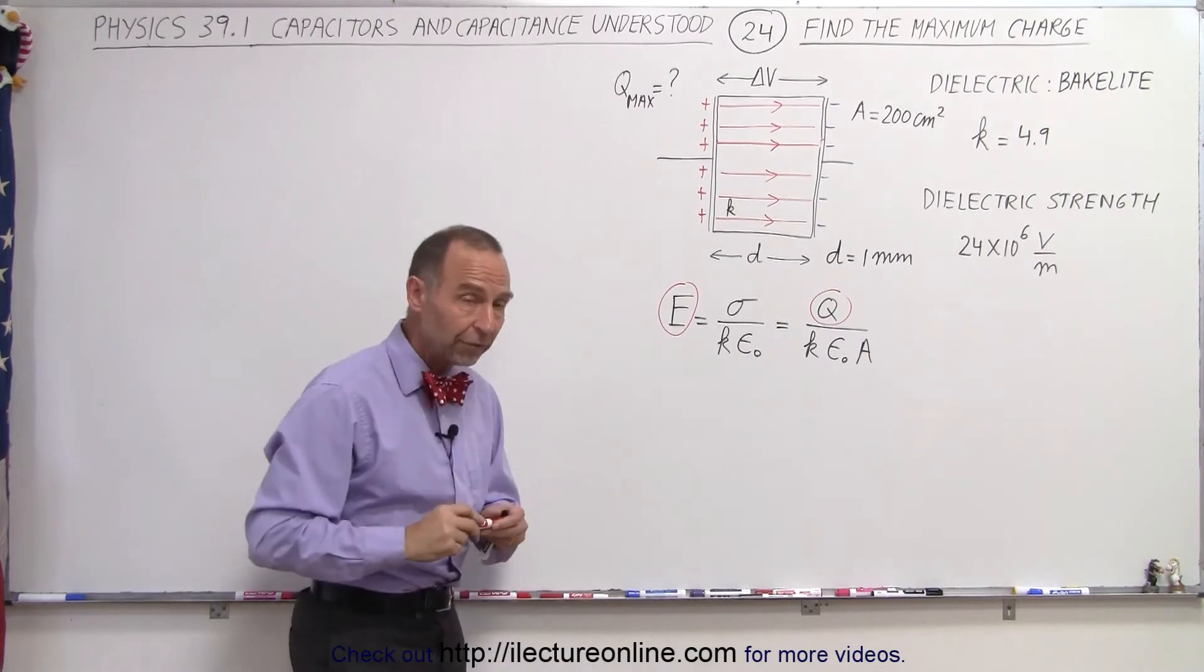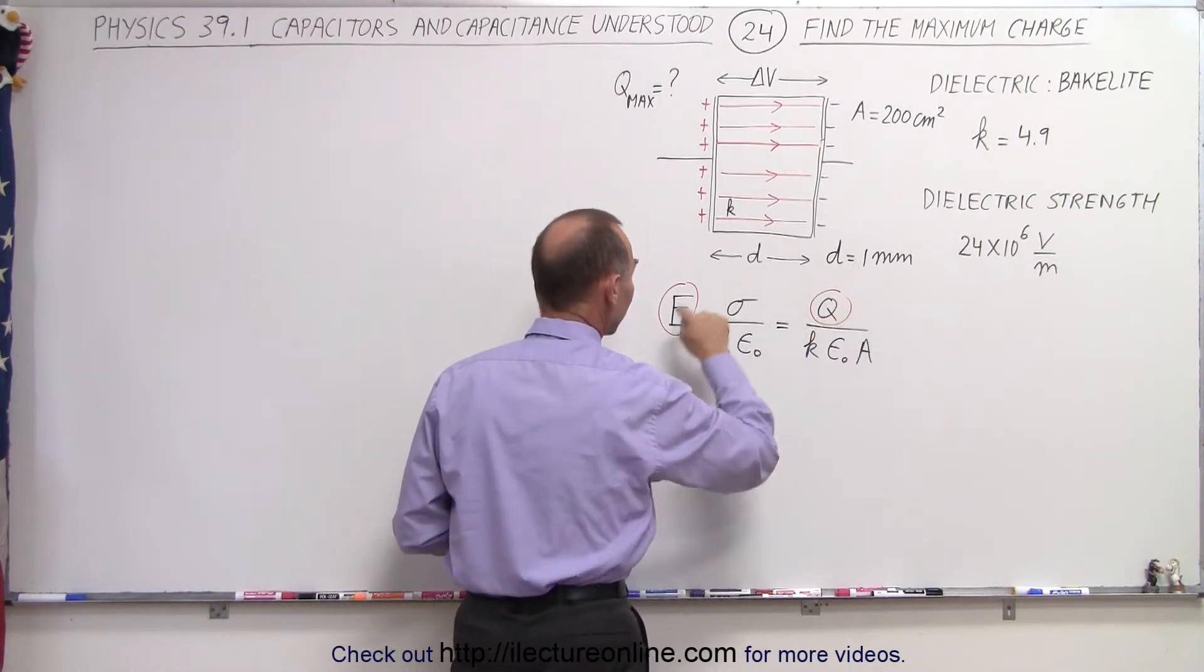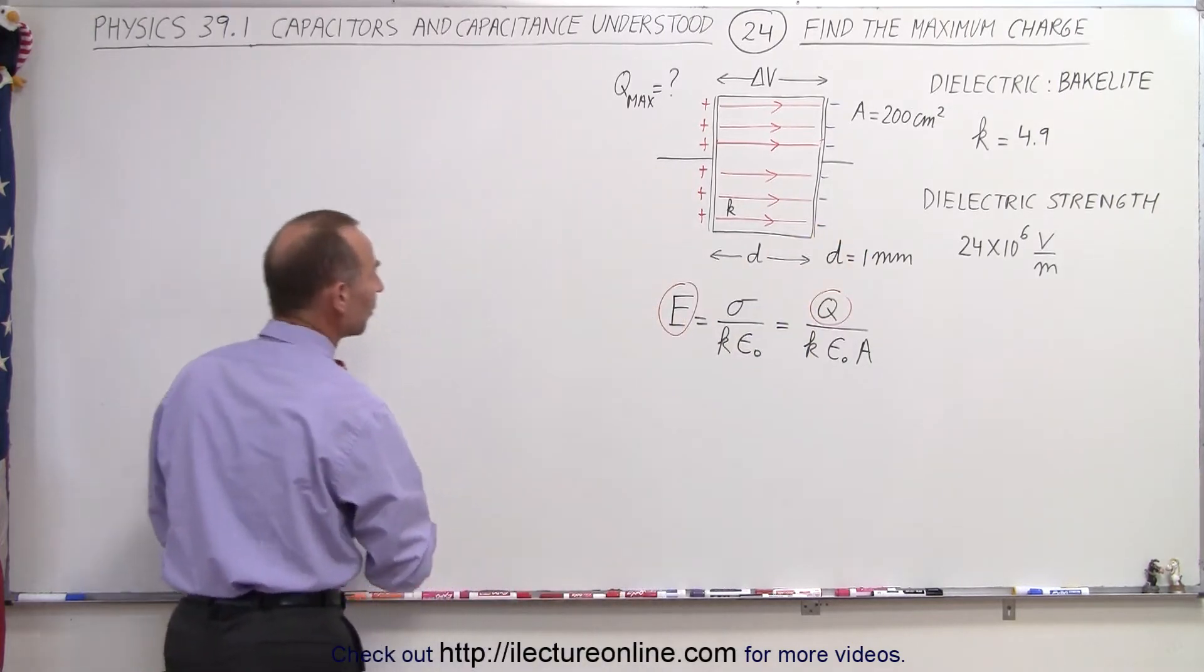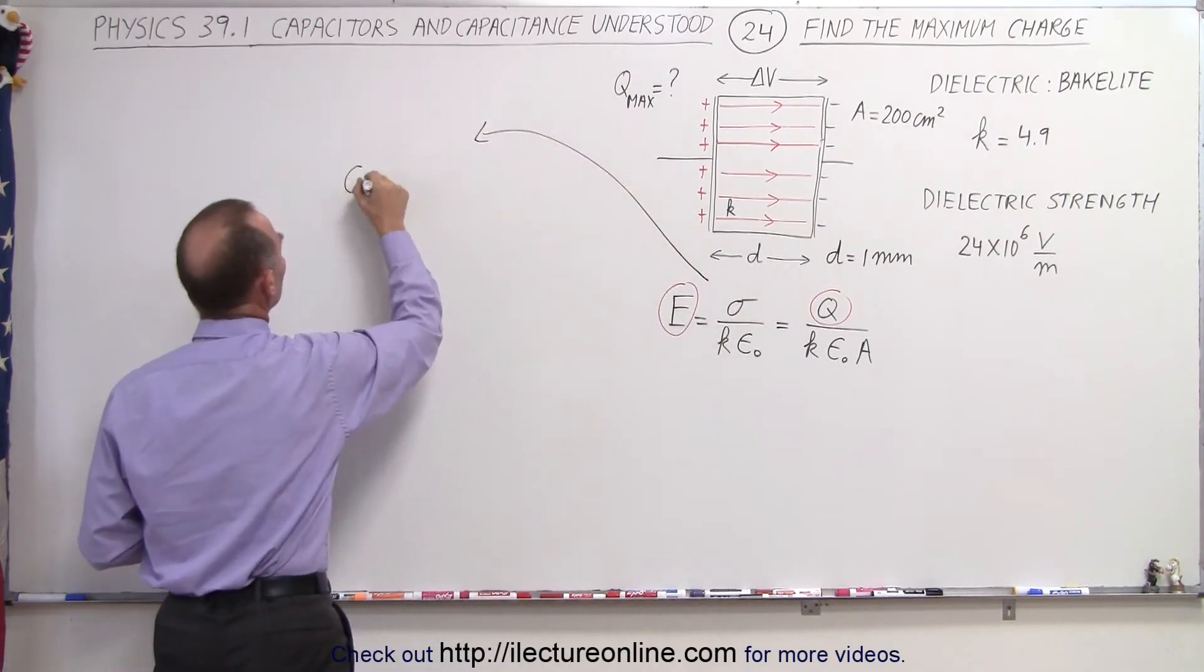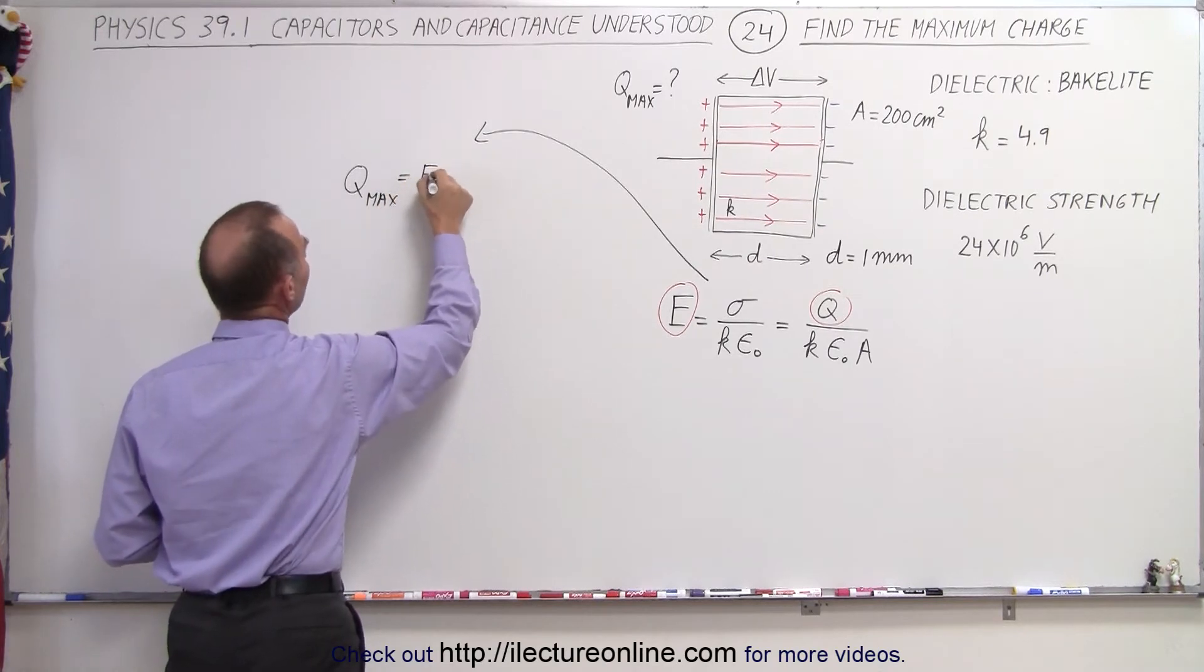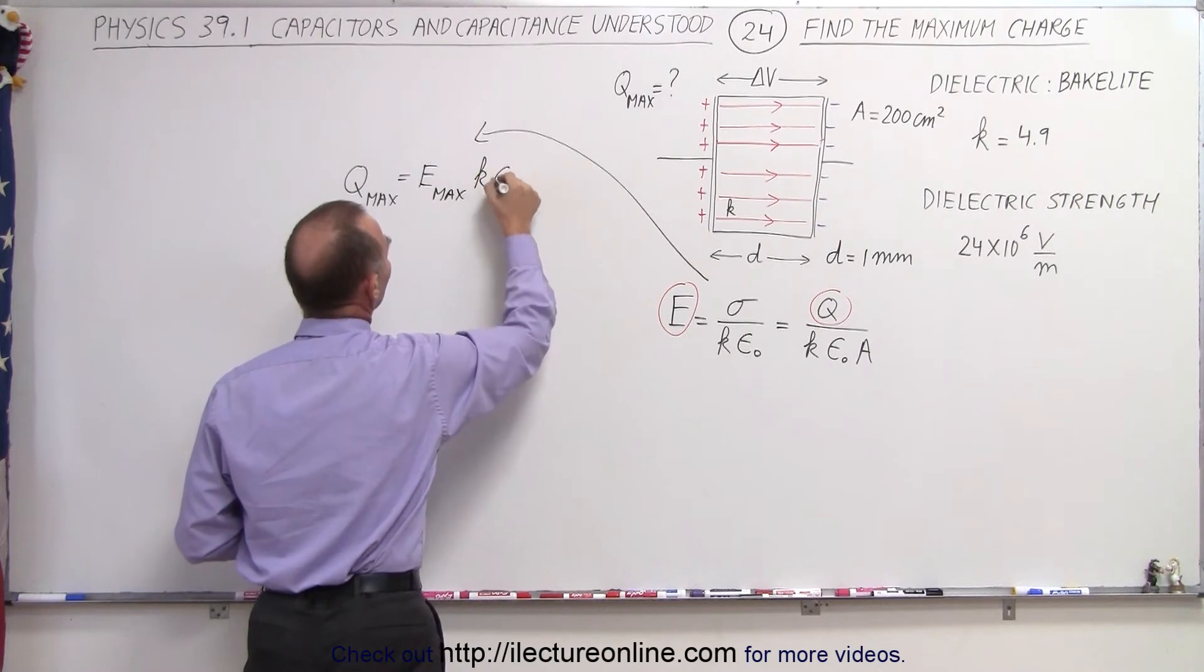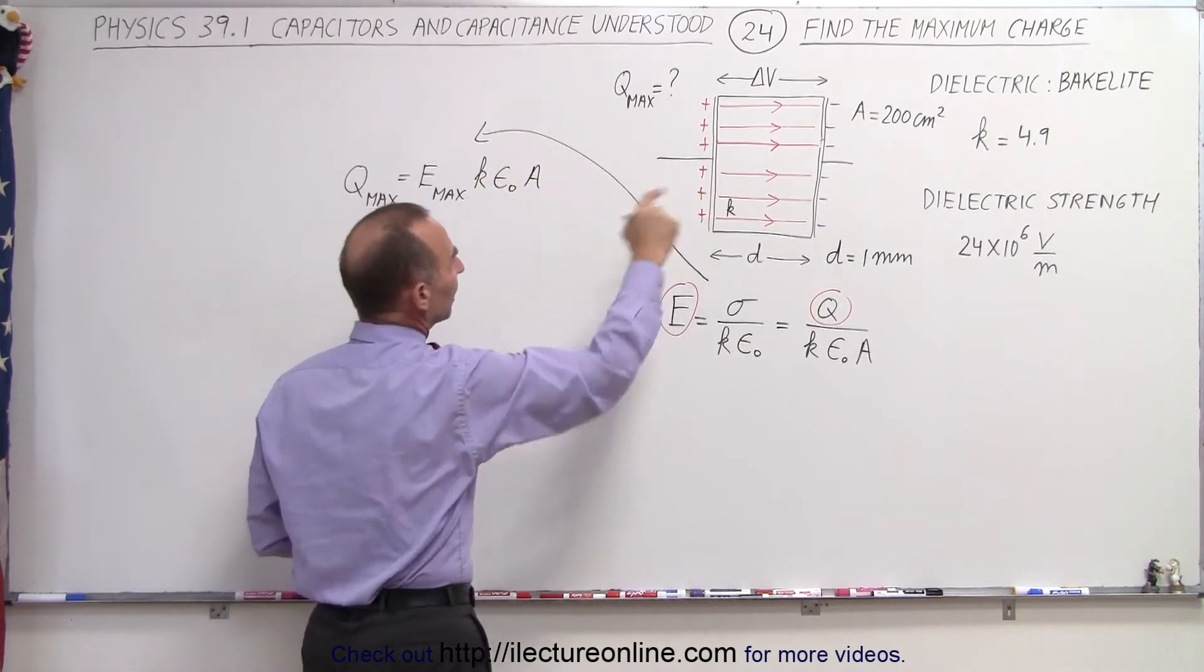So the way to solve it then is to go ahead and solve this equation for q and plug in for the electric field the maximum electric field the dielectric can withstand, which means that from this equation, we end up with q max is equal to E max times k epsilon sub nought times a. k. They do give us the area right there.